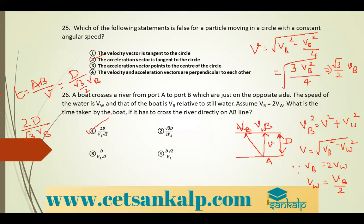To summarize the boat problem: the boat crosses from A to B on the opposite side. The speed of water is VW and that of the boat is VB. Using the Pythagoras theorem on the velocity vectors, the final answer is 2D divided by (√3·VB).